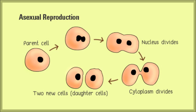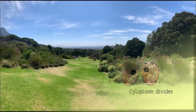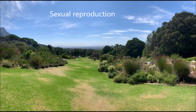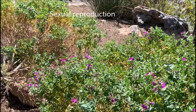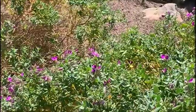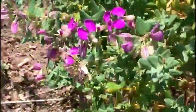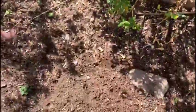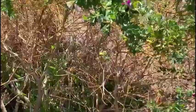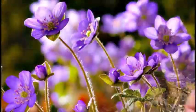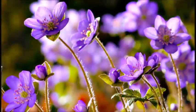Asexual reproduction produces individuals that are genetically identical to the parent plant, as shown in the diagram. Sexual reproduction involves the fusion of two nuclei from two individuals of opposite sexes, using specialized cells called gametes. Sexual reproduction is more effective in changing environmental conditions, as offspring inherit genes from two parents, resulting in greater genetic variation rather than clones of the parent plant.